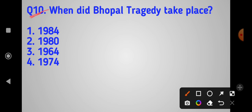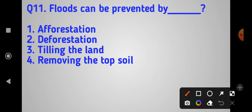When did Bhopal tragedy take place? The Bhopal gas tragedy, the gas leak incident, occurred in 1984. Option number one is correct - 1984. The Bhopal tragedy was one of the biggest gas leak disasters.